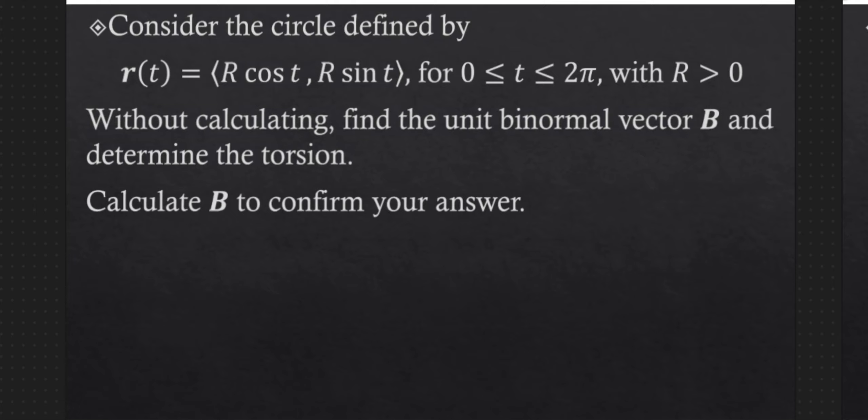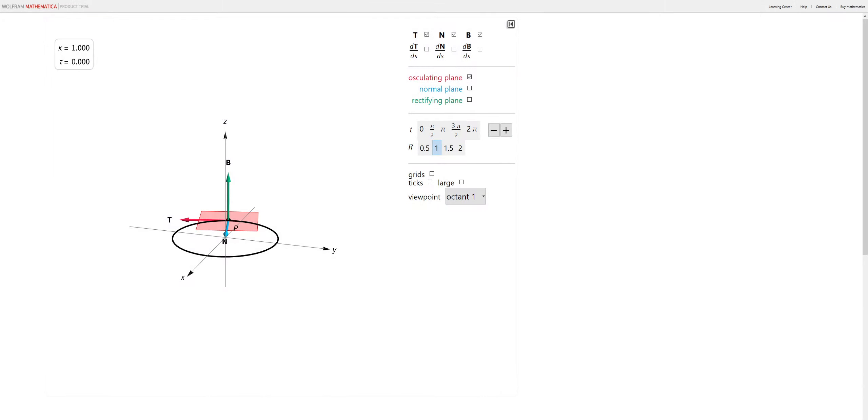So here we have our circular trajectory, pretty standard, and we want to calculate torsion of this thing. So before we do that, as I always recommend, it's good to first make a prediction for what the unit binormal vector will be and the torsion. Remember, that's the derivative with respect to arc length of the unit binormal vector.